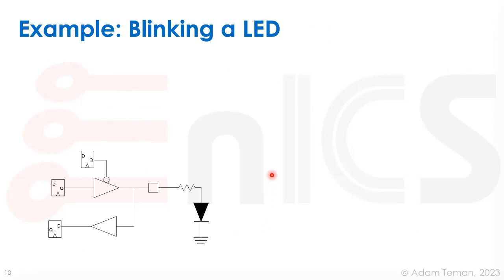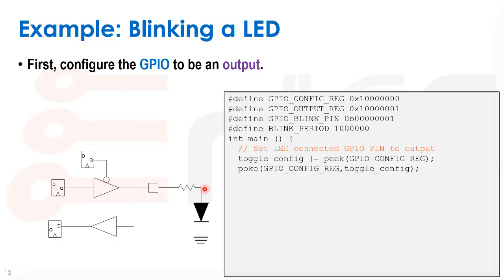Let's see how to use a GPIO for the 'hello world' of embedded systems — blinking an LED. We have our GPIO pin — a chip might have 30 or 32 of them — each with a specific address or bit in a word. We connect an LED such that when the pin goes high (VDD), current flows and the LED turns on; when it goes low, the LED turns off. In the C code we define named constants for the GPIO config register, output register, blink pin, and blink period.